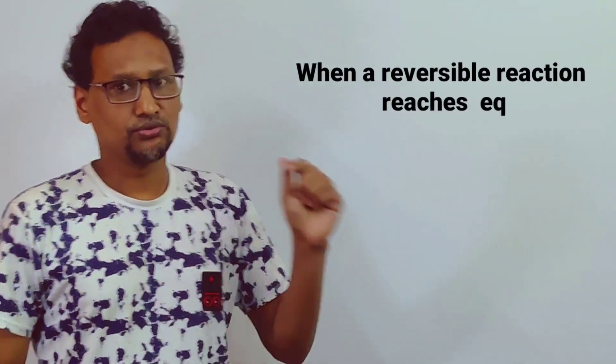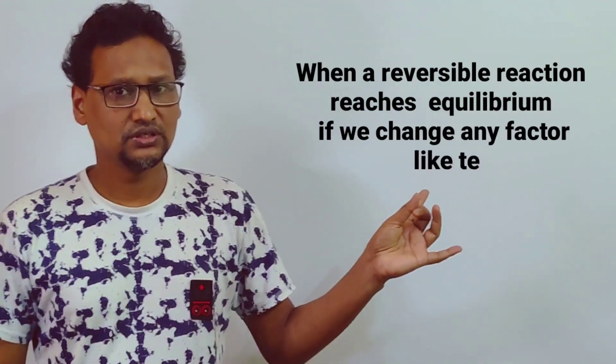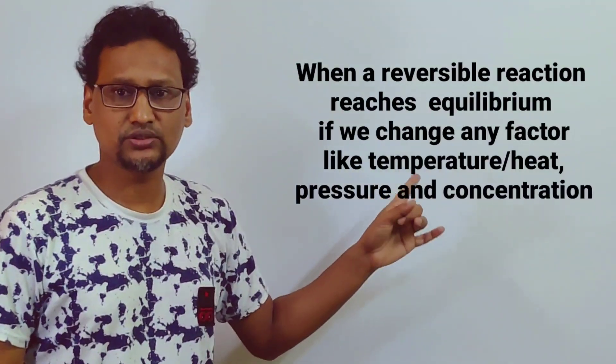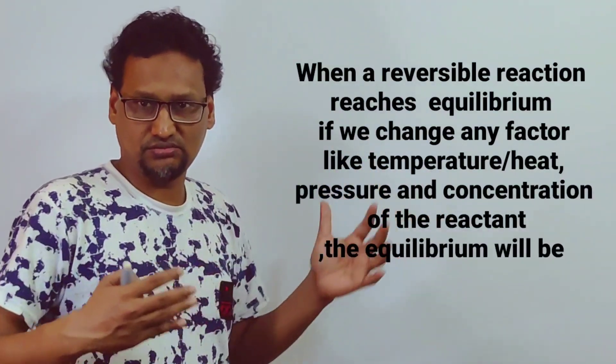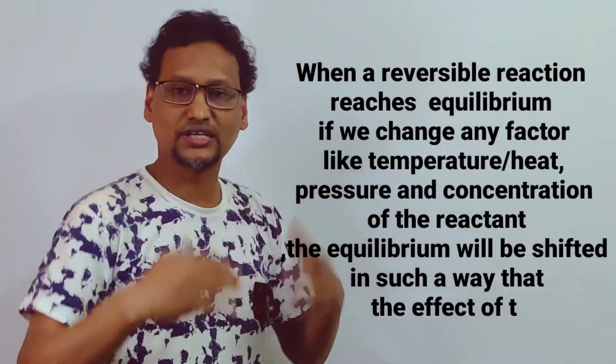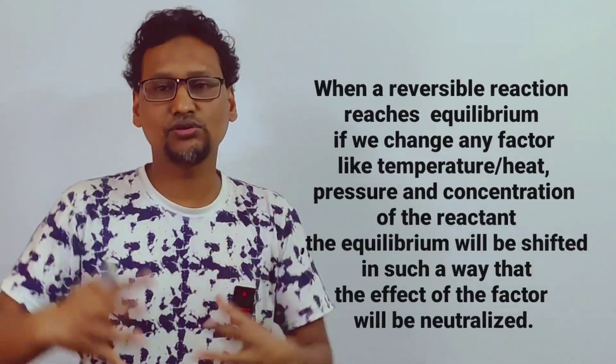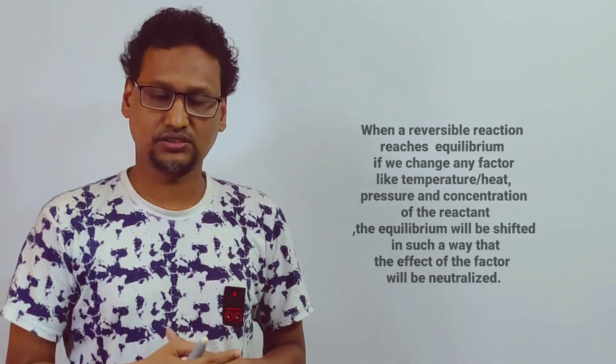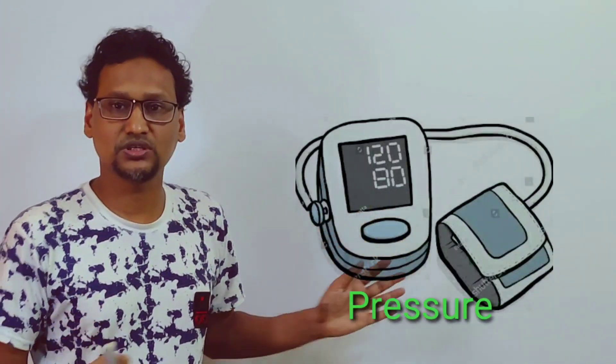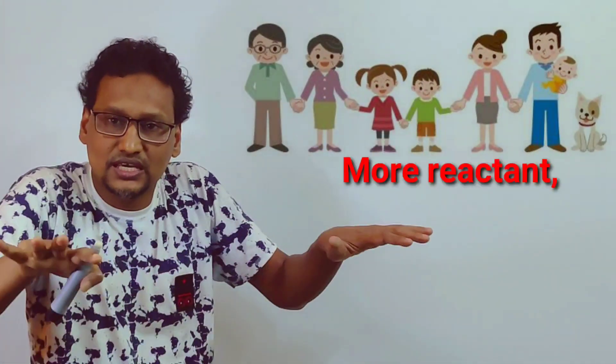So we can say: when a reversible reaction reaches equilibrium, if we change any factors like temperature, pressure, or concentration, they can control the reaction — they can increase or decrease the rate of reaction, that's why they are known as factors. Just like a teacher who can influence you to get a better result, heat, temperature, pressure, and concentration can influence the rate of reaction. If we change any of these factors, the equilibrium will shift in such a way that the effect of the factors will be neutralized.